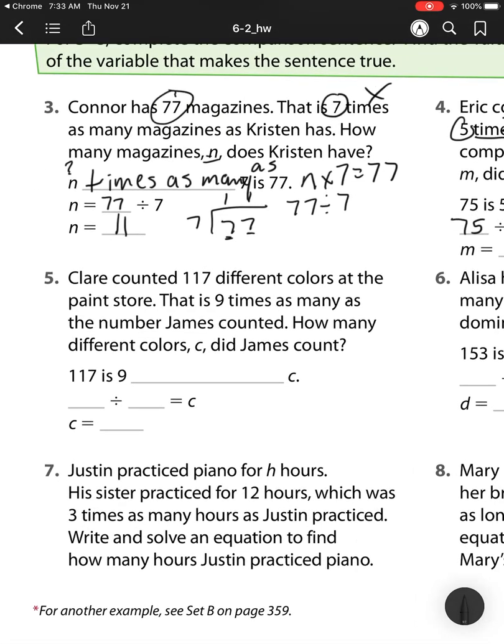Heading off to number 5. Claire counted 117 different colors at the paint store. That is 9 times as many as the number James counted. How many different colors c did James count? Well, again, this is 9 times as many as c. So again, I have that mystery in the letter c.